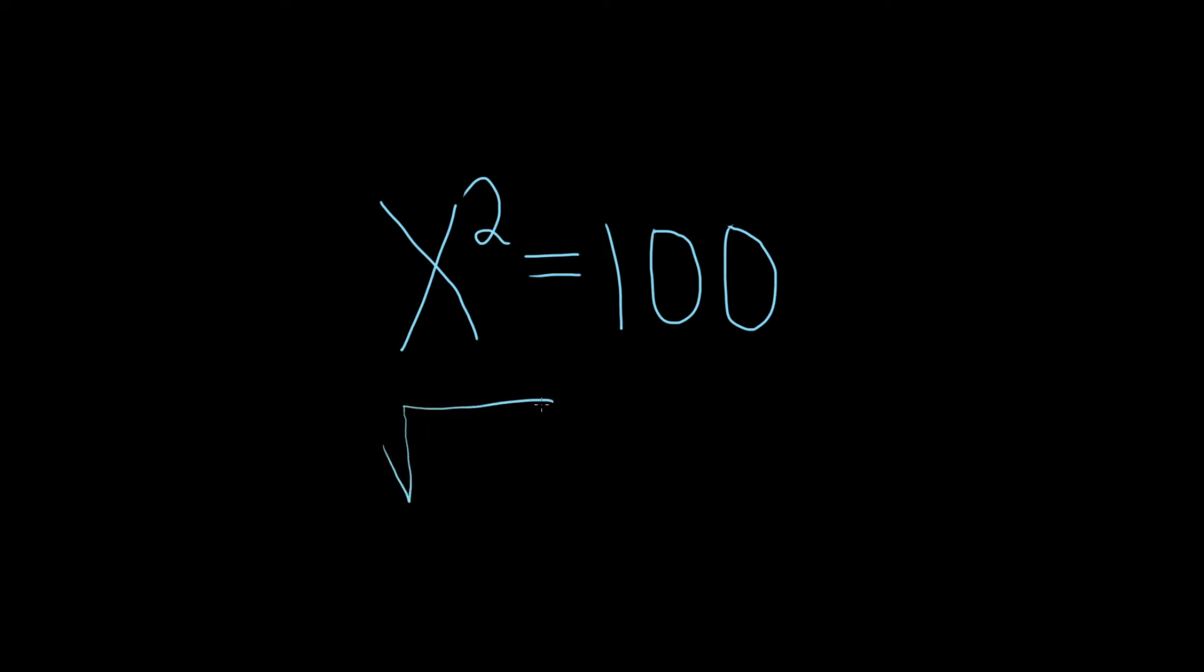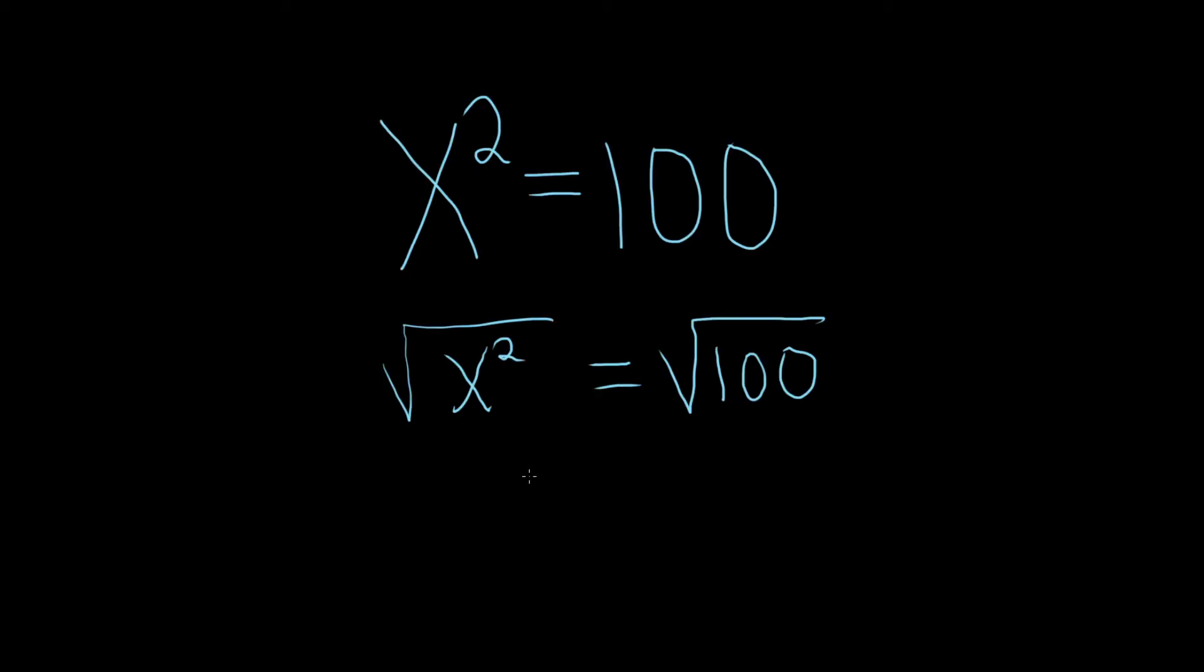So the square root of x squared equals the square root of 100. And when you do that, the following happens. So you get x over here.